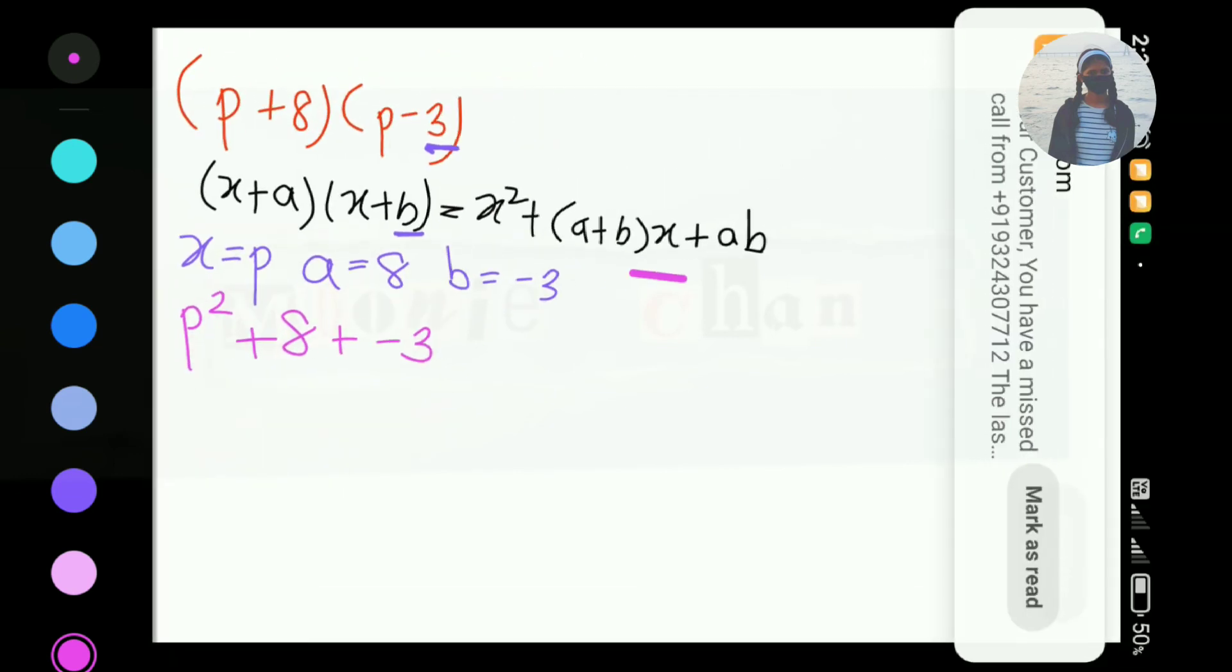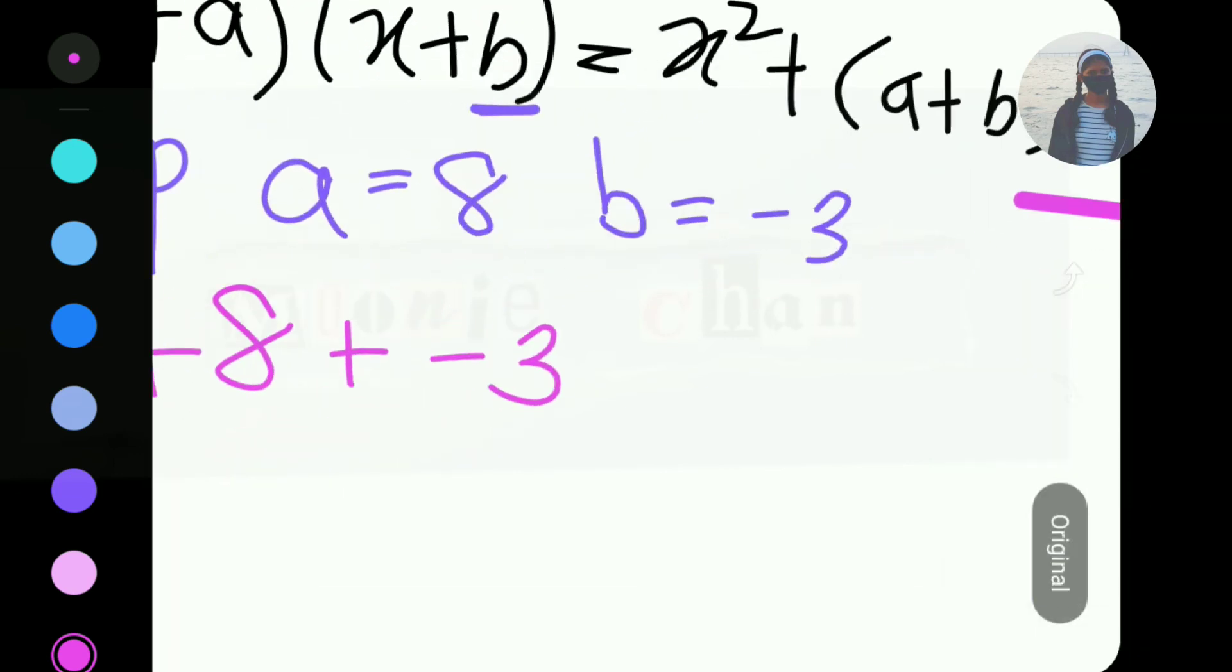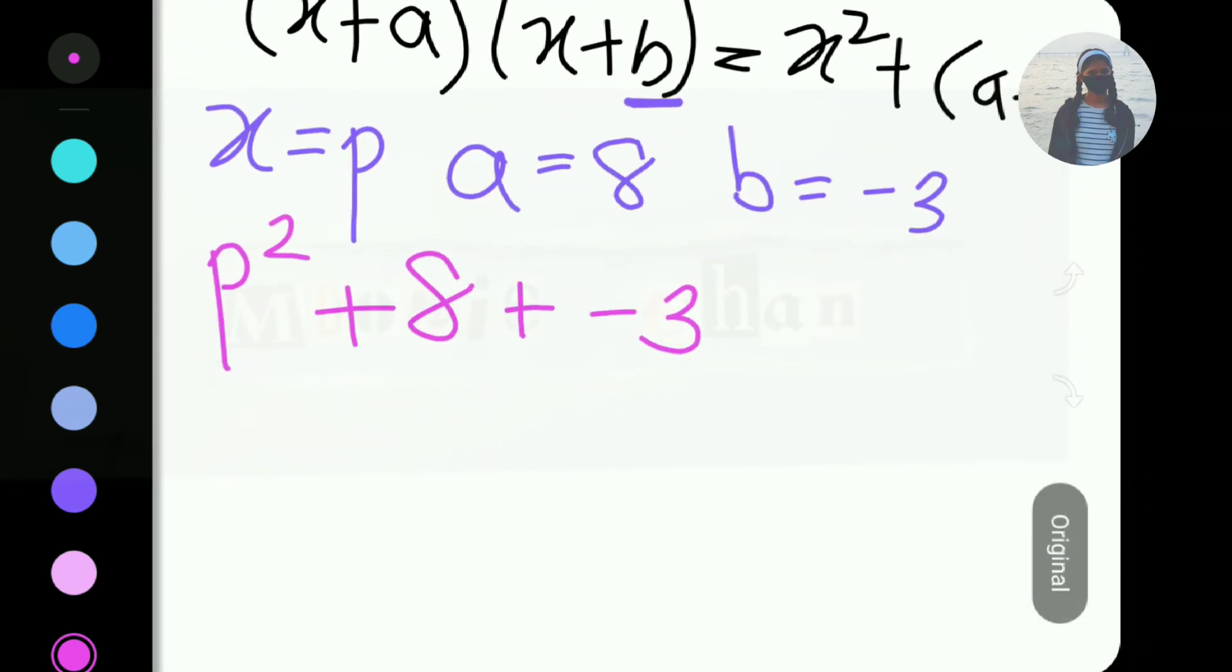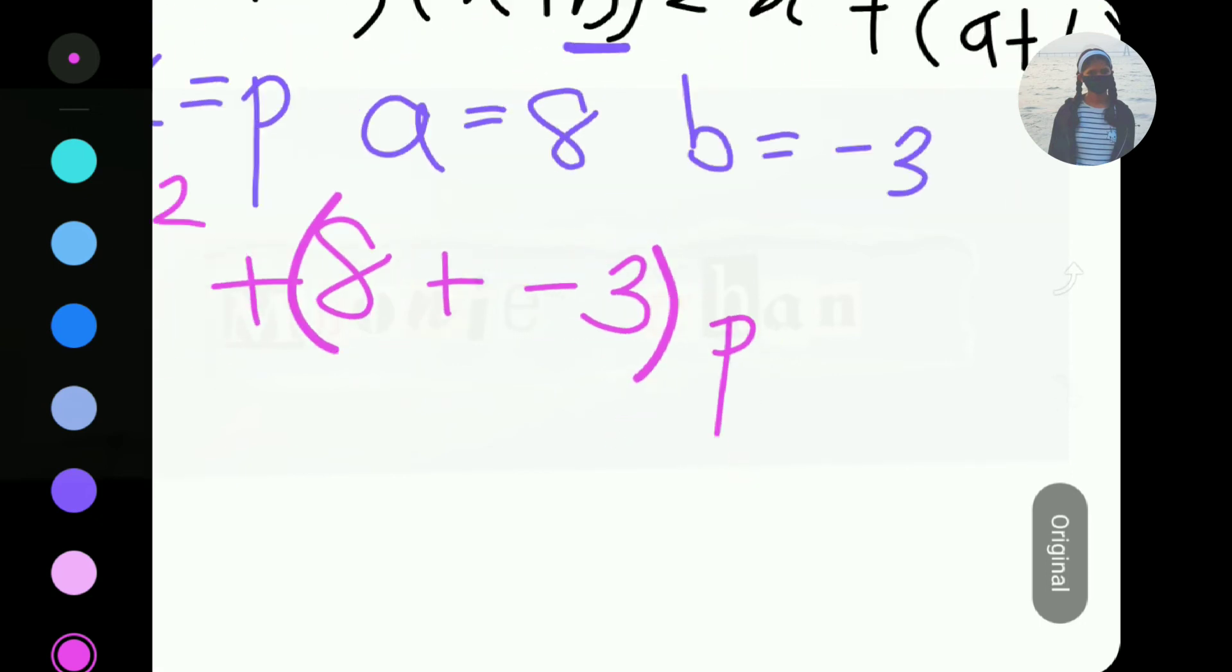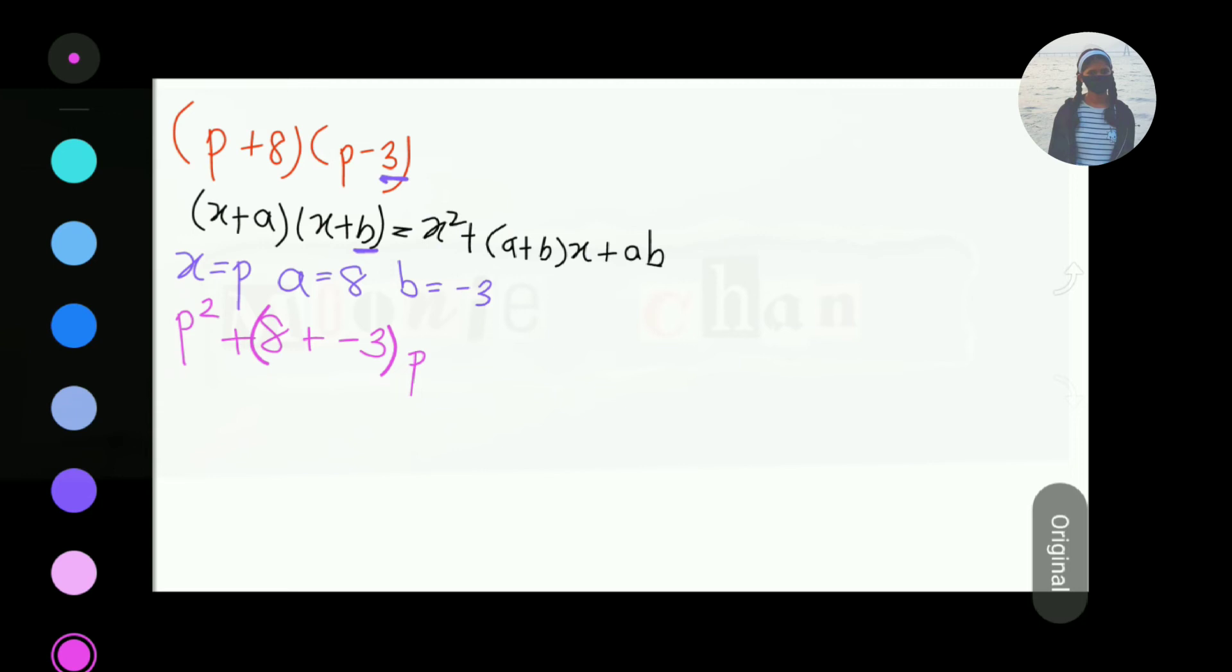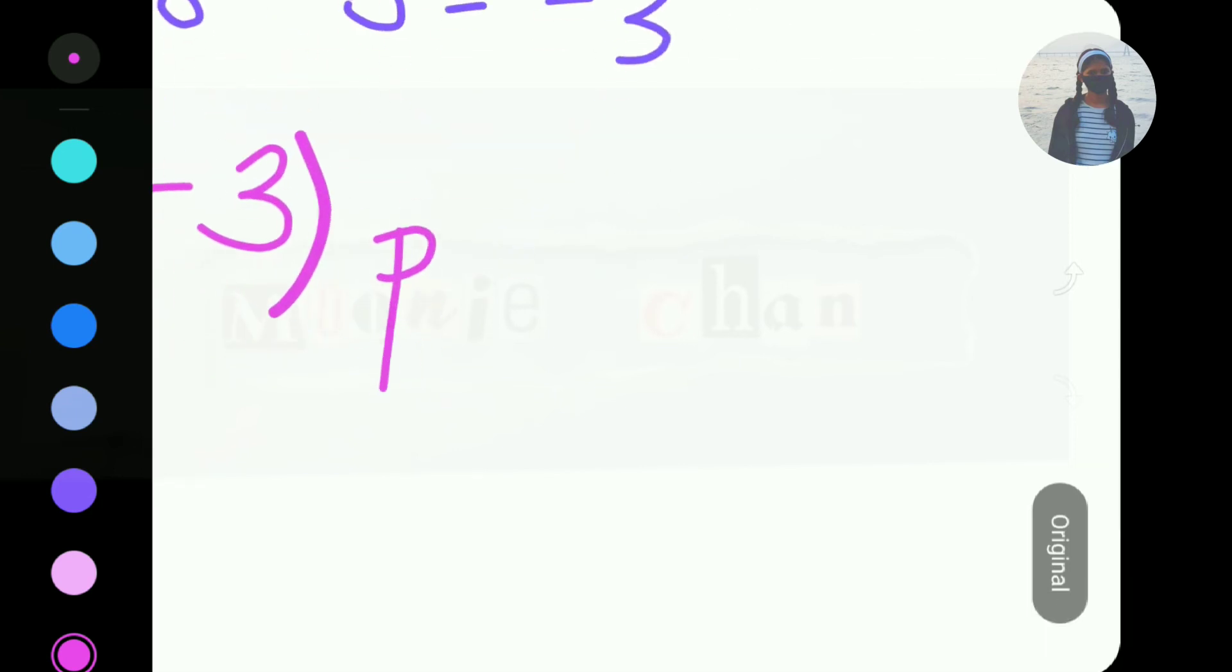So, we'll write the whole X. X over here is P, right? So, we'll write the whole P. Now, the end is AB. Now, A is 8 and B is minus 3. So, we'll write 8 multiplied by minus 3.